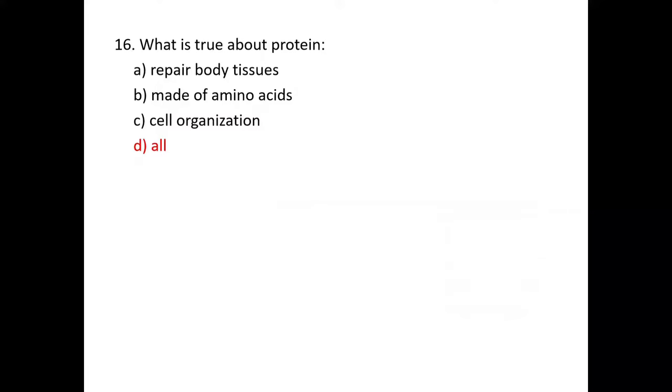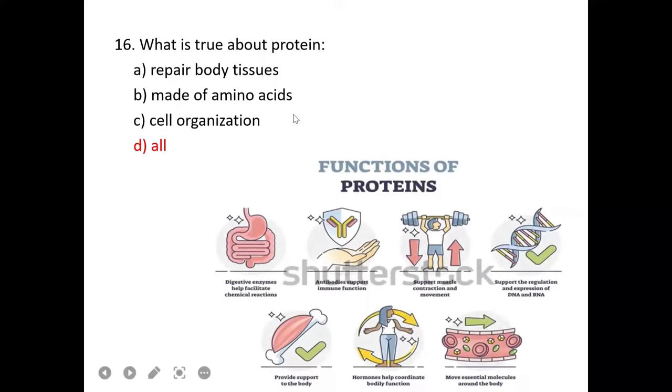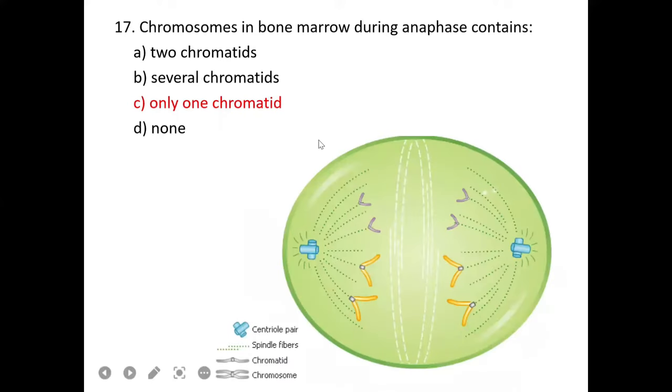Which of the following is conjugated protein? Conjugated proteins include phosphoproteins, glycoproteins, nucleoproteins, and chromoproteins. Albumin, histone, and tubulin are not conjugated proteins, so D is the correct option.